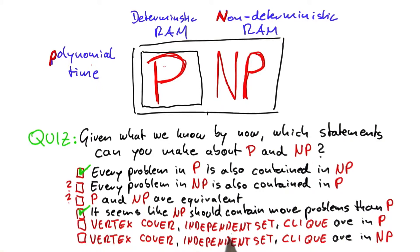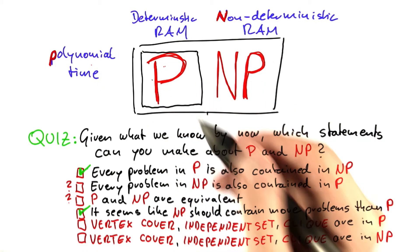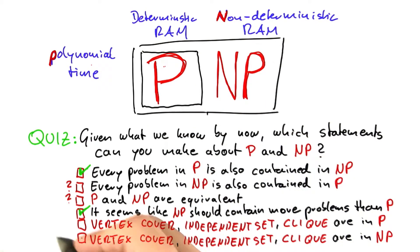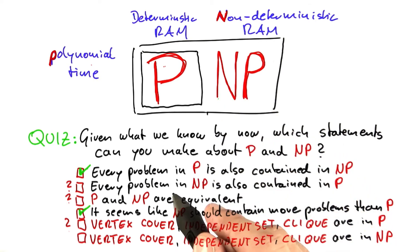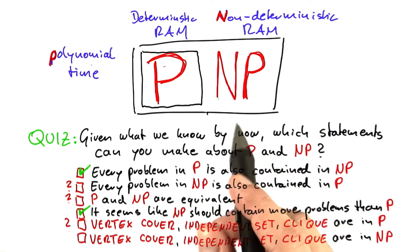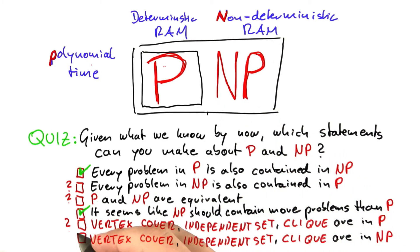Vertex cover, independent set, and clique — if we knew that they were in P, we would have a polynomial time algorithm. We can't really make that statement right now. But vertex cover, independent set, and clique — yes, they are in NP. We showed that. They can be solved in polynomial time if we have the wonderful and magic if-better function available.